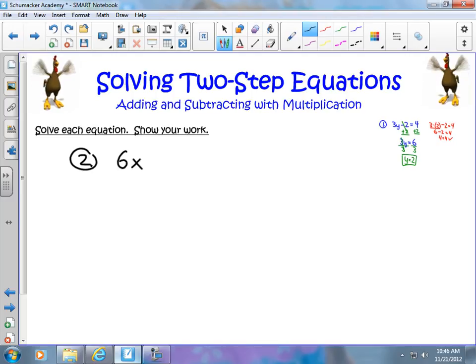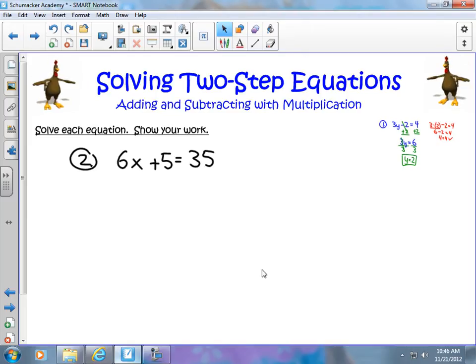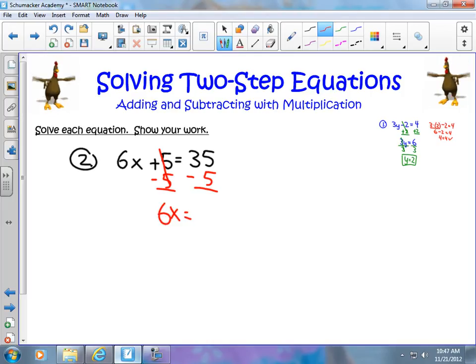So let's try one with addition this time. We're going to do 6x plus 5 equals 35. In this case, I'm going to undo the addition by subtracting. I'm going to subtract 5 from both sides. 5 minus 5 cancels out, and I get 6x left over. 35 minus 5 gets me 30. Now I can undo the multiplying. I have 6 times x. I can divide it by 6 because that's the inverse of multiplying by 6. These cancel out. I have x equals 5.